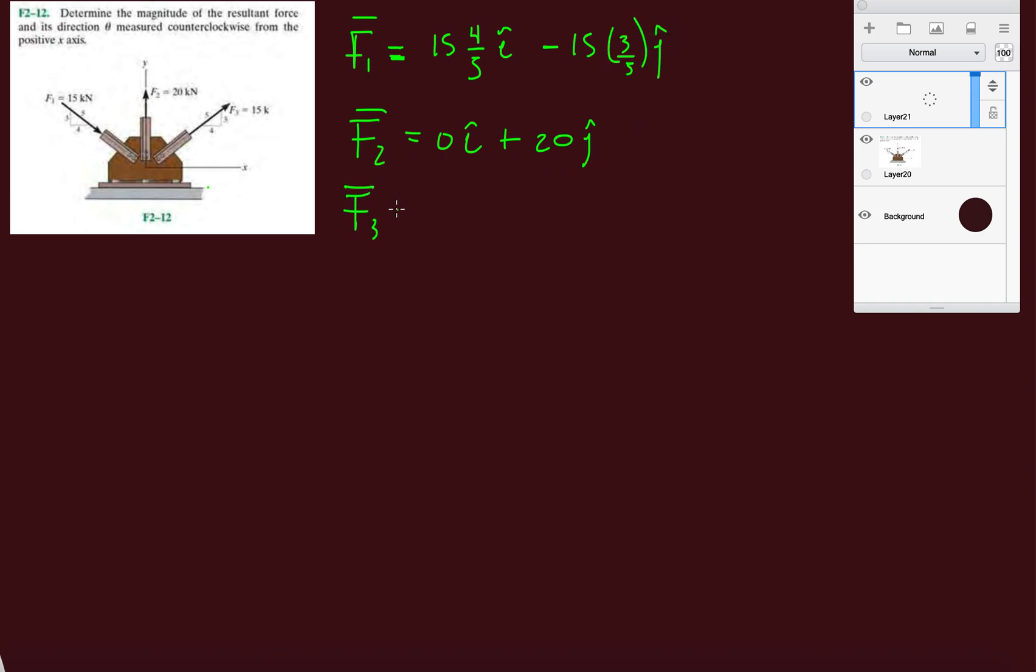And now let's do F3. Oh man, my screen's being glitchy. It's not good. Watch it just break on me right now. All right, and then F3 is pointing up and to the right, so we know it's going to be 15 times four-fifths plus 15 times three-fifths J. We're getting the hang of this.